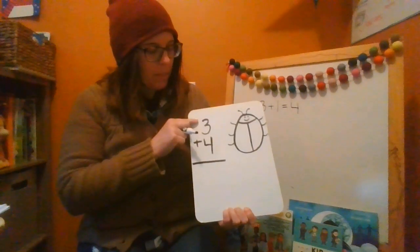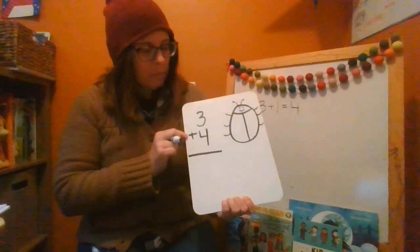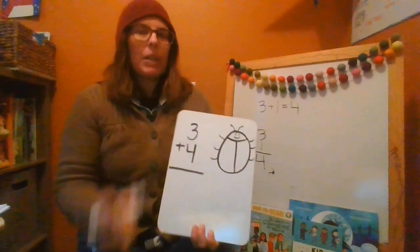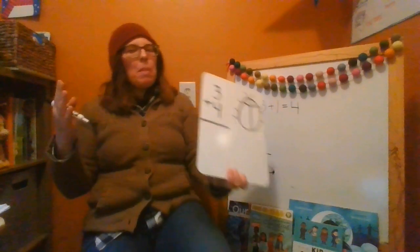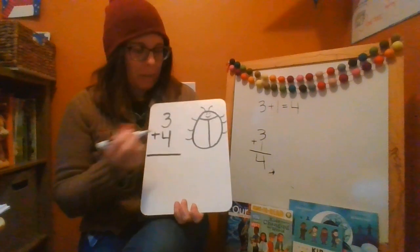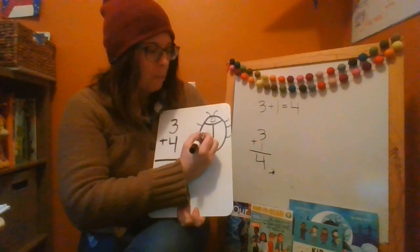So here's an equation. And you read this like this. 3 plus 4. And then we're going to draw dots on the ladybug. Because a lot of times for math, you don't want to draw a really complicated picture, but something that's simple and easy. So dots are pretty easy.